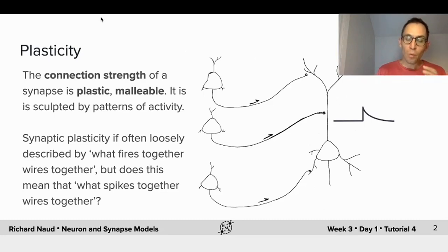Altered by what? Well, many experiments have shown that if you stimulate neurons on both sides of the synapse, you may alter the effect of a spike arriving on the postsynaptic cell. Synaptic plasticity is often described by saying what fires together, wires together.